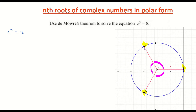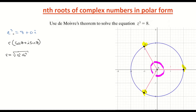Looking at our complex number, z³ = 8. They've only given us a real part, but I'm going to put in 0i to make it easier to work with, so my complex number is 8 + 0i in rectangular form. To convert to polar form r(cos θ + i sin θ), we need r = √(a² + b²) where a is the real part and b is the imaginary part, and θ = tan⁻¹(b/a).